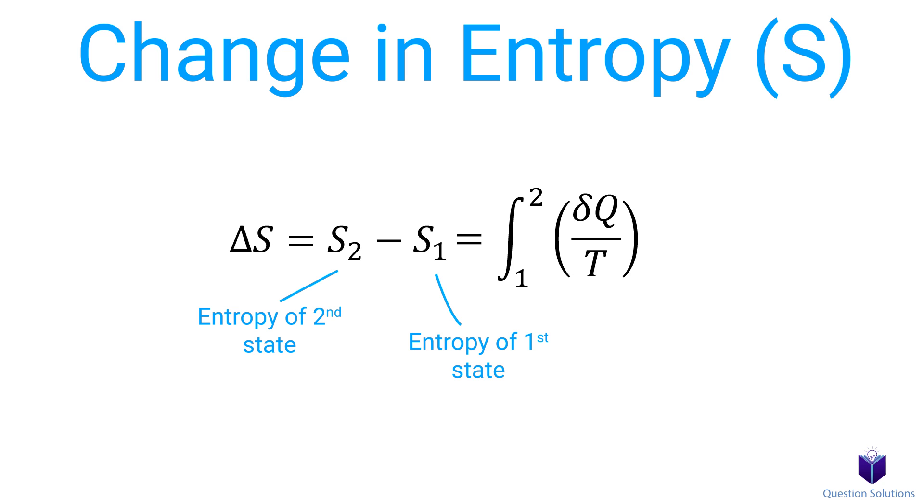In the integral, q is the heat supplied to the system, or heat transfers from the system, and t is the temperature of the system in kelvins. From this equation, we can see that entropy change is based not only on energy transferred as heat, but also the temperature at which the transfer takes place.